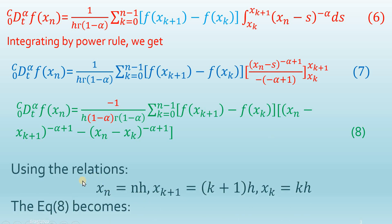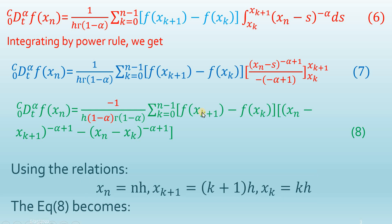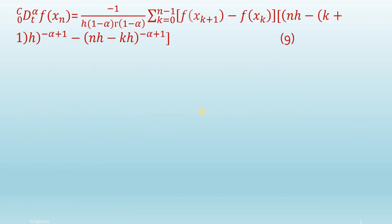We know that x_n = nh. Similarly, x_{k+1} = (k+1)h and x_k = kh. Substituting these into equation 8 gives equation 9.